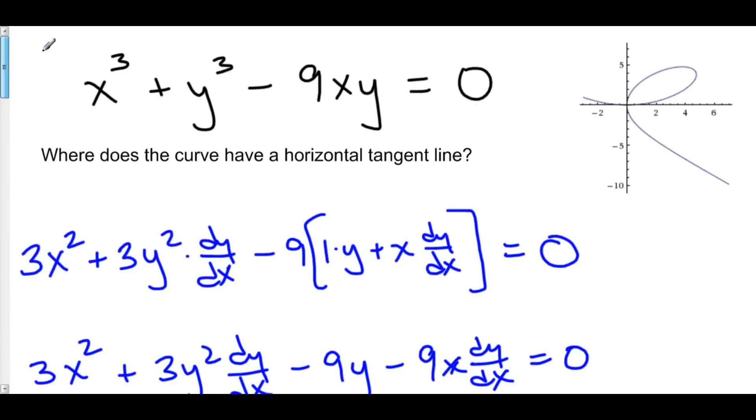That was one of our points where we had a horizontal tangent line. And inspecting the graph, it is true that there is a horizontal tangent line at x equals 0. But let's find the other spot, which was around 4 we said.